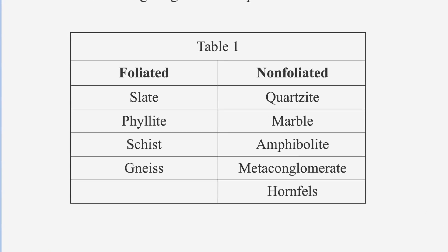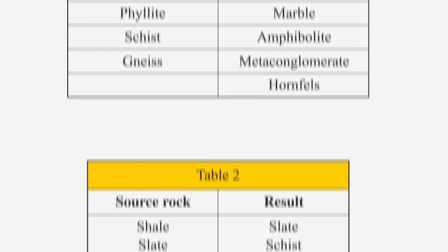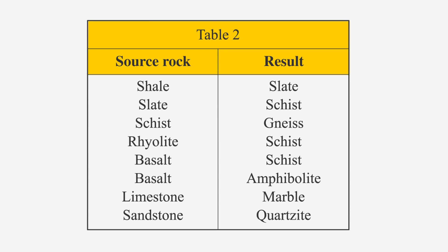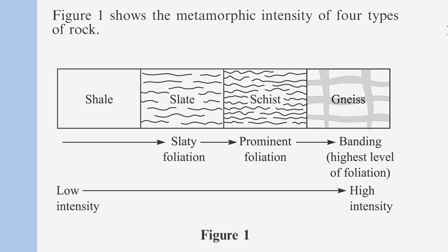If we skim the tables, paying attention to the headers, we'll know where to look for the data. Table one describes foliated and non-foliated rocks, and table two describes source rocks and the resulting rock. Figure one shows types of foliation as visual references.